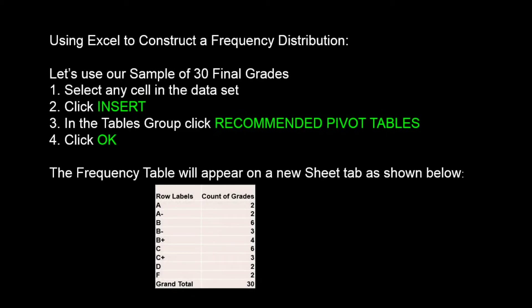Excel has a pivot table tool to make the construction of a frequency distribution quick and easy. Let's see how this is done for the sample of 30 grades. Here are the steps: Step one, select any cell in the dataset. Step two, click Insert. Step three, click Recommended Pivot Tables. Step four, click OK. You'll get a new sheet at the bottom, and you can click on the tab to see the new frequency table embedded in that new sheet.